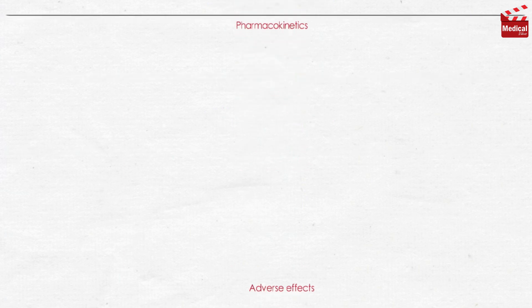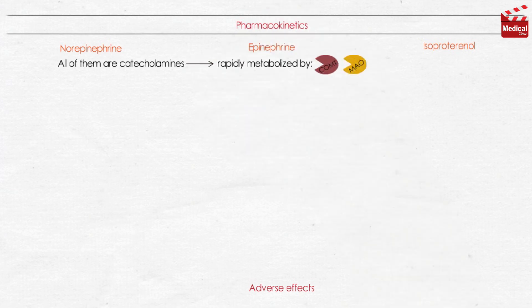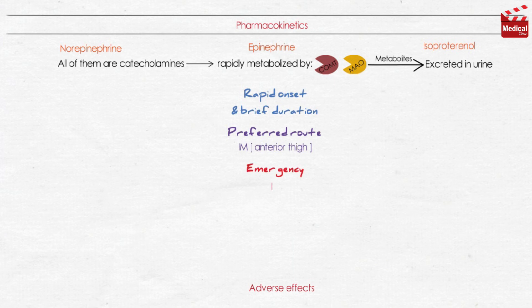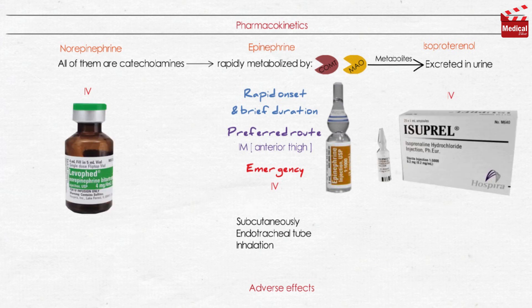Regarding pharmacokinetics, as all three are catecholamines, they are rapidly metabolized by MAO and COMT, and their metabolites are excreted in urine. Epinephrine has a rapid onset and brief duration of action. The preferred route is intramuscular in the anterior thigh due to rapid absorption, but in emergency cases it is given intravenously for the most rapid onset of action. It may also be given subcutaneously, by endotracheal tube, and by inhalation. Norepinephrine and isoproterenol are given intravenously for rapid onset of action.